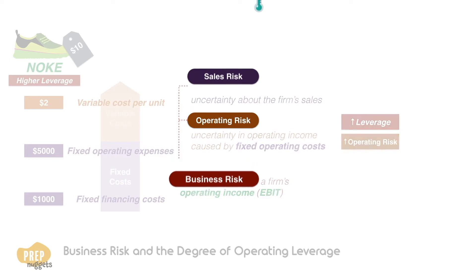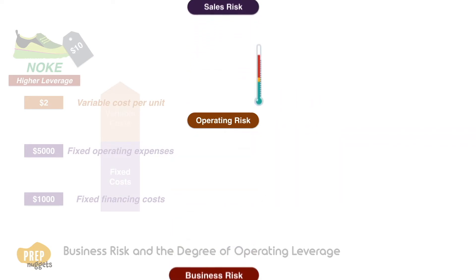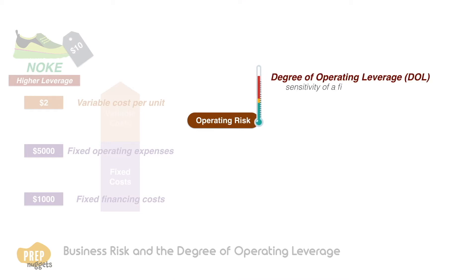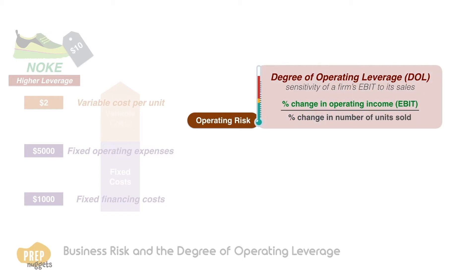As such, to measure the level of operating risk of a company, we can estimate the degree of operating leverage of the company. This measure is the sensitivity of a firm's EBIT to its sales, and is defined by the ratio of the percentage change in operating income to the percentage change in units sold.